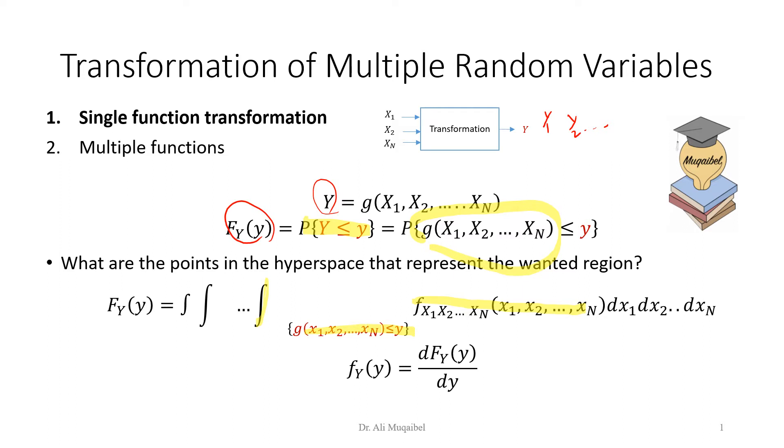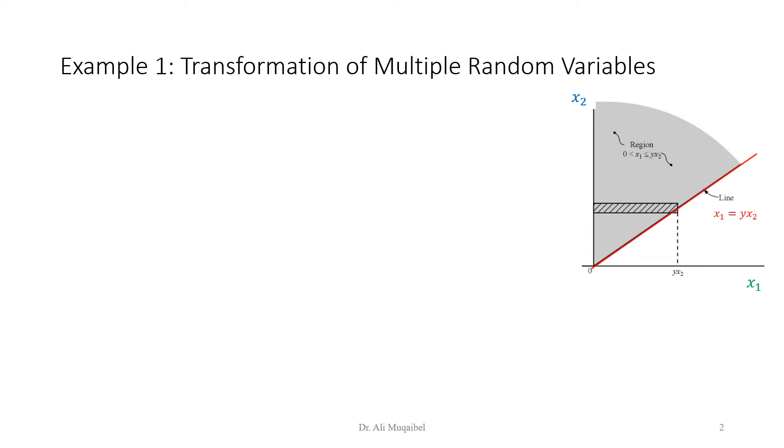The first example that we'd like to consider is the transformation of multiple random variables where y and x are related by the following equation. So y equals to x1 divided by x2. We need the ratio between the two. We have a signal and a noise and we'd like to get the ratio between the two. For example, x1 and x2 are two positive. So we only consider the positive random variables. Otherwise, we'll have trouble. So x1 is positive, x2 is positive. And we want to find the region where x1 and x2.